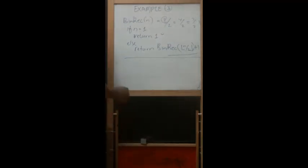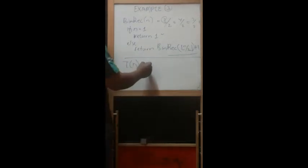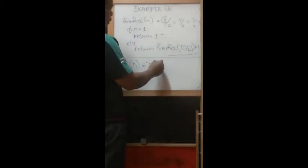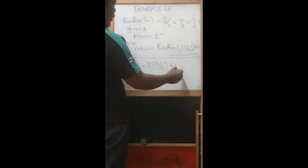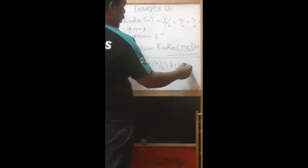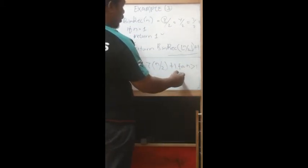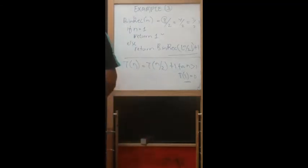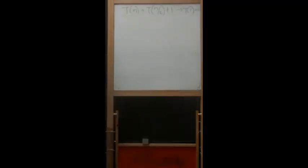So we need to set up the recurrence as usual. It becomes T(n) - we want to estimate the time. Here it's T(n/2) plus 1 for n greater than 1, and the stopping condition is T(1) equals 0. Now, based on this recurrence relation, we are going to do the analysis. But if you notice, this is not in the standard form of recurrence relation n over 2.